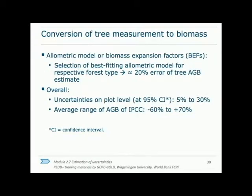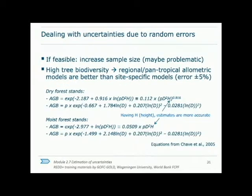Carbon stock estimation generally involves some sort of allometry, which relates a measurable variable of the tree such as DBH or height to biomass. These are based on field samples and are location and species specific. Even a plot-specific allometric equation is not going to be perfect, so the higher in scale you aggregate the equation to, the higher the error from this conversion will be. Two ways to deal with random errors are to increase the sample size and to use as location-specific an allometric equation as possible, though both are not always technically feasible.